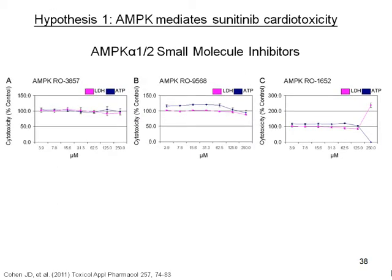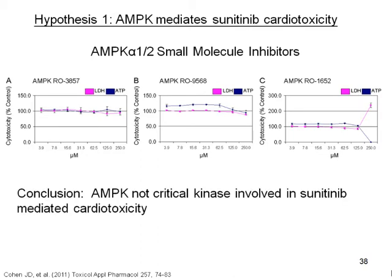I went into the vast kinase library that Roche has and pulled out AMPK alpha-1 and two small molecule inhibitors that inhibit around 100%. I treated from 4 micromolar to 250 micromolar and measured both ATP depletion and lactate dehydrogenase — there was no cytotoxicity for two of the molecules, and a TC50 of around 250 micromolar. Therefore, I concluded that AMPK is not a critical kinase involved in sunitinib-mediated cardiotoxicity.